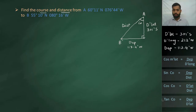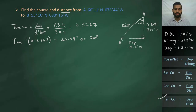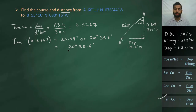Now we need to find the course and the distance. For finding the course, we use the formula: tan course equals departure upon DLAT, since both departure and DLAT are known. This gives us a quadrantal course of 20 degrees 38.6 minutes. Before this quadrantal course comes the direction of DLAT, which is south. After this quadrantal course comes the direction of departure, which is west. So the quadrantal course is S 20 degrees 38.6 minutes W.